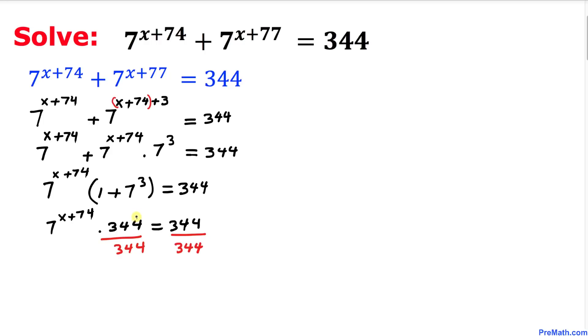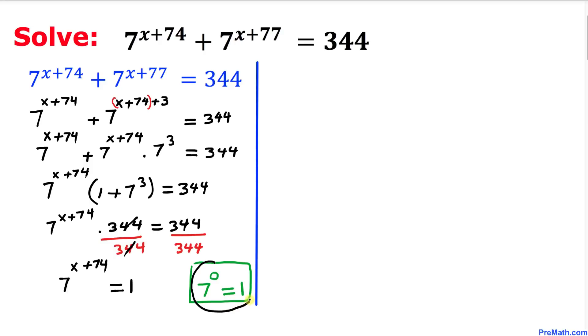On this side and 344 on this side, so this and this thing is gone. So we ended up with 7 to the power of x plus 74 equal to 1. And one more thing, just keep in your mind that 7 to the power of 0 is equal to 1, so this one on the right-hand side I can write as 7 to the power of 0.